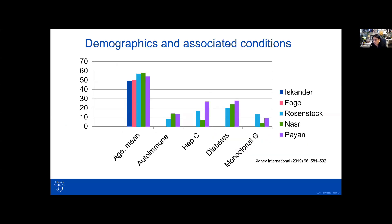Fibrillary glomerulonephritis is now a well-known entity. The epidemiological details include an older age at which fibrillary glomerulonephritis is known to occur, although there are rare reports of it occurring in children — it's generally over 40 years of age. There is an association with autoimmune diseases, hepatitis C, diabetes, and about 15 to 20 percent of patients who have fibrillary glomerulonephritis also have an underlying monoclonal gammopathy.